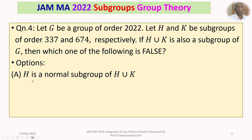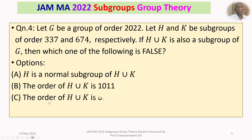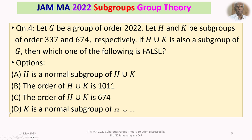We are given four options. Option A: H is a normal subgroup of H union K. Option B: the order of H union K is 1011. Option C: the order of H union K is 674. Option D: K is a normal subgroup of H union K.